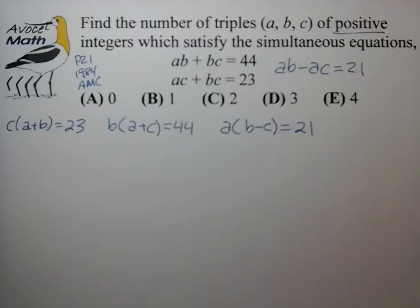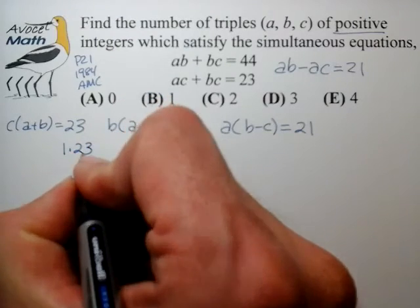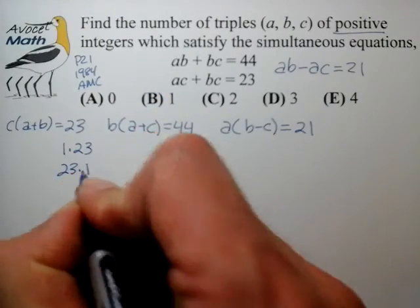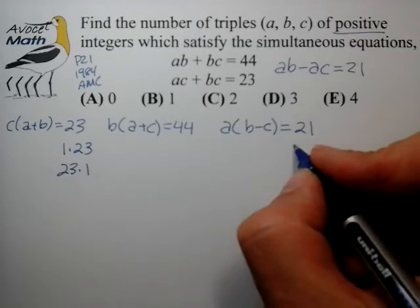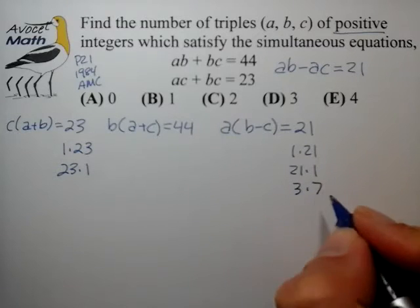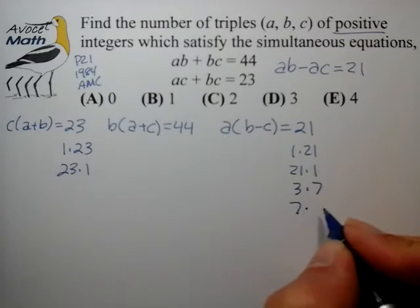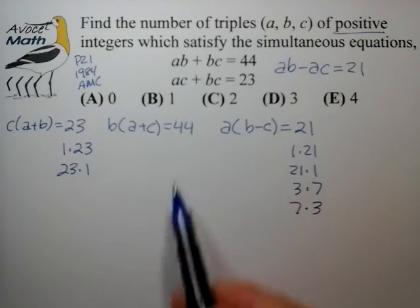We notice that the number of factor combinations that we need to consider has a lot to do with the number that appears on the right. In the case of a prime number we only have two possible factor combinations to consider. 21 is seven times three, so it actually has four combinations: 1 times 21, 21 times 1, 3 times 7, and 7 times 3.